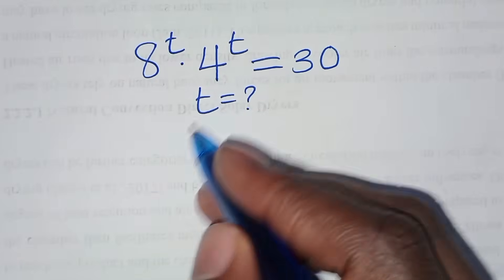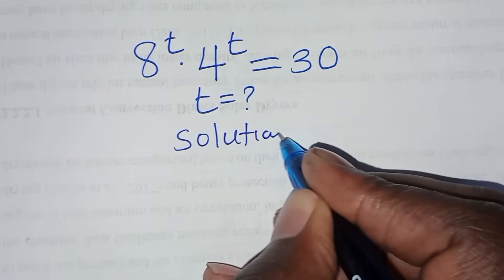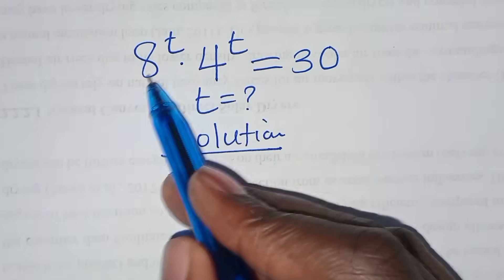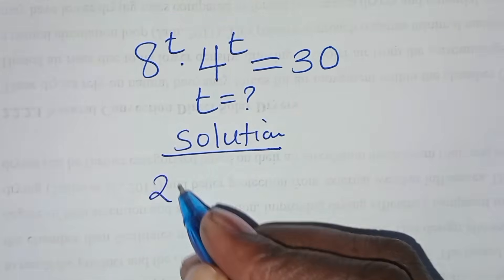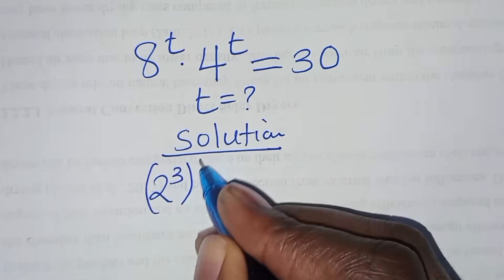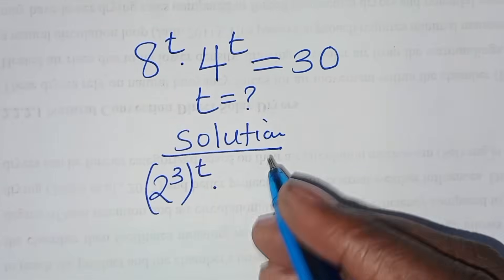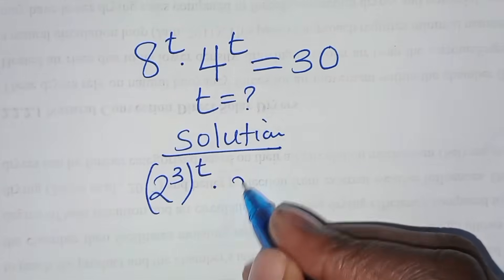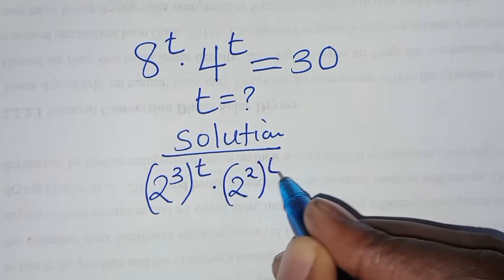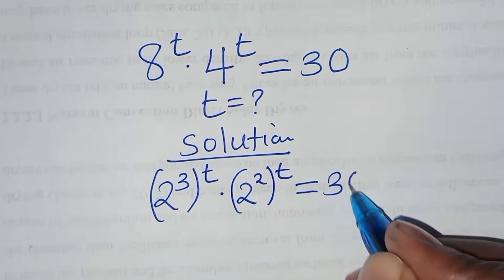Let's provide the solution. We can express 8 to the power t as 2 to the power 3, raised to the power t, multiplied by 4 to the power t, which we can express as 2 to the power 2 raised to the power t. This is equal to 30.